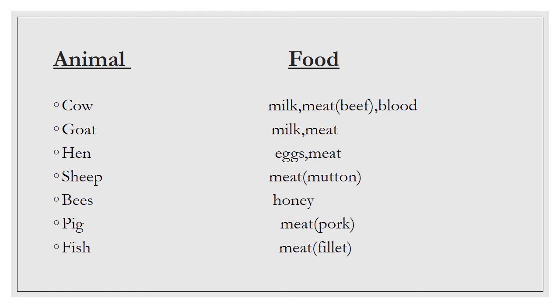We have fish. We eat fish meat, which is called fillets. Those are the foods that we get from animals.